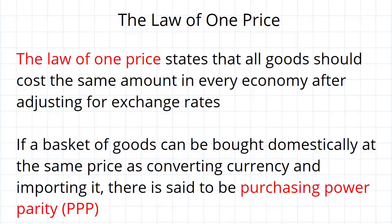Once you've exchanged your money at the exchange rate and bought the good, it should be the same price everywhere. That is what the law of one price says. Now, if a basket of goods can be bought domestically at the same price as converting your currency and importing it, then you say there is purchasing power parity. So the gist of the law of one price is that there should be purchasing power parity everywhere.